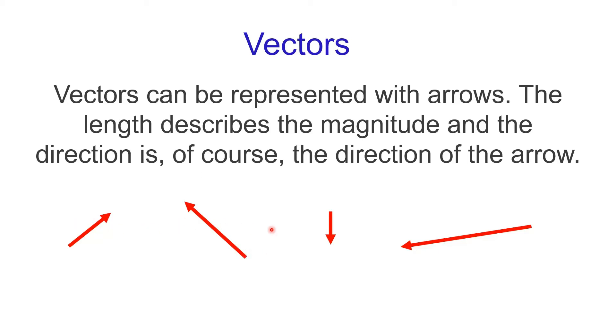So here, I would be representing four different vectors. If they were forces, the directions are obviously showing where they're going, and then the length would show you which one's stronger or weaker.